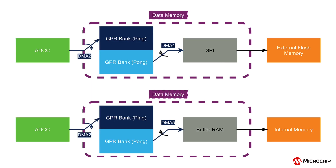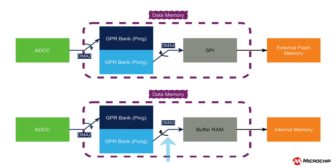The second DMA channel moves the data from the ADCC to a ping-pong buffer that is used to simultaneously write to a buffer and send data to the external or internal memory. DMA 4 is used for external storage and moves data from the GPR register to a dedicated SPI peripheral that is connected to the Flash2Click.